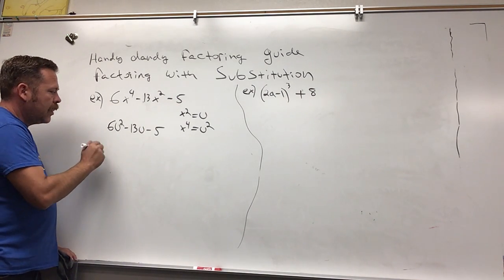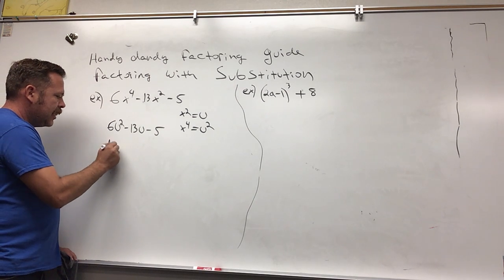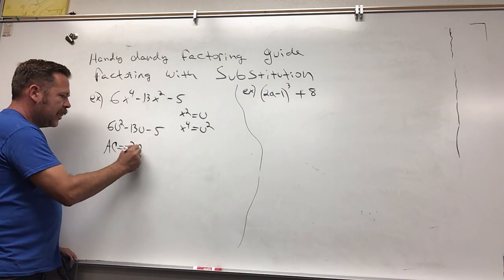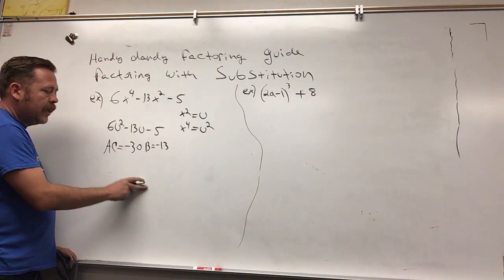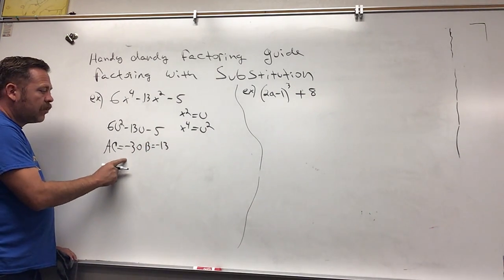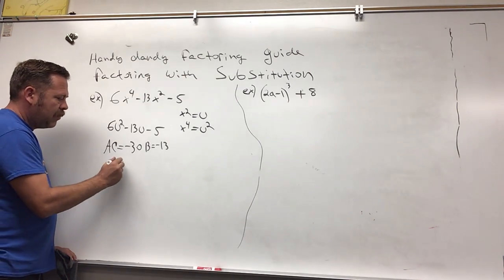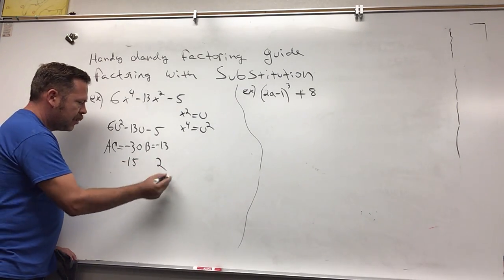So AC equals negative 30, B equals negative 13. Now we need to find two numbers that multiply to negative 30 and add to negative 13, and that would be negative 15 and 2.